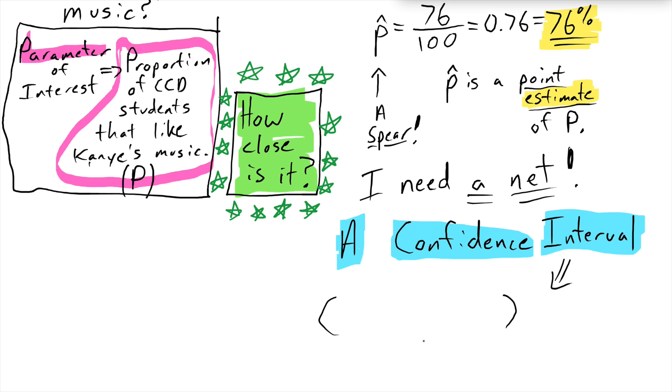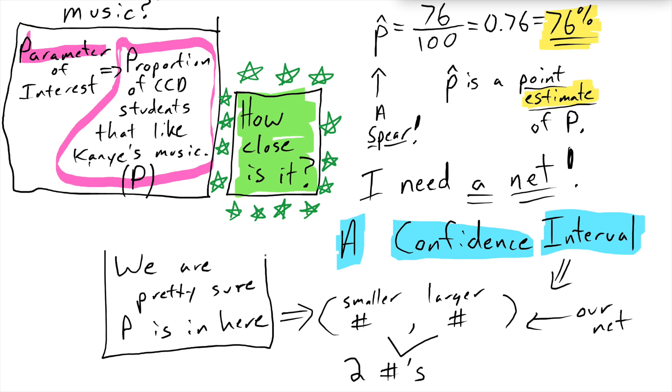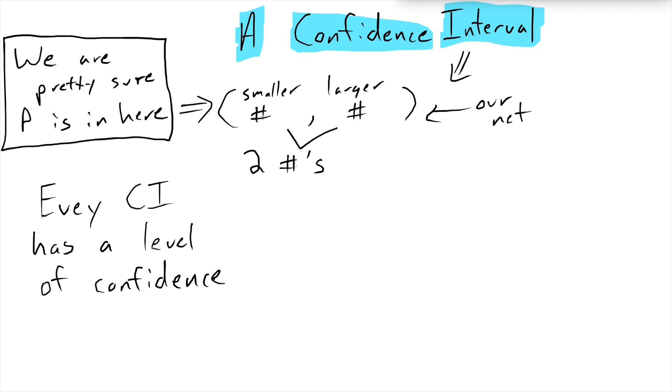In math, an interval is two numbers, one of which is smaller than the other. And what we're going to say is something similar to, we are pretty sure that our parameter is going to be somewhere within our interval. We don't know where, but we're going to say that it's going to be bigger than the smaller number and smaller than the larger number. It's going to be inside of our net. So it turns out that every confidence interval has what we call a level of confidence, which is a number. And this level of confidence basically says how sure we are that we think the true parameter is within our interval.